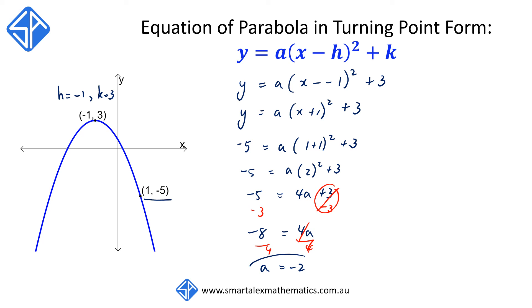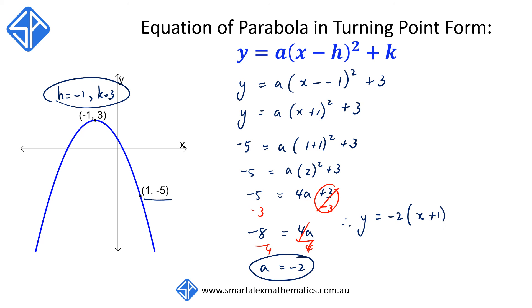Now that we have the values for a, which is -2, h is -1, and k is 3, we can therefore write the equation of the parabola as y = -2(x + 1)² + 3.